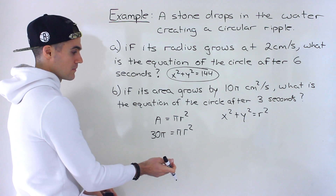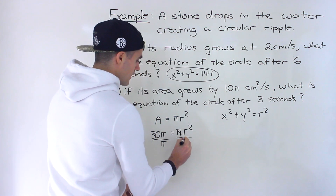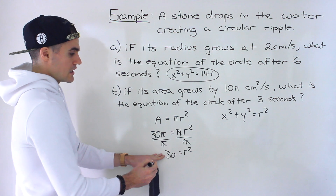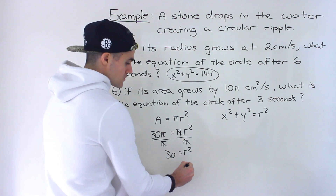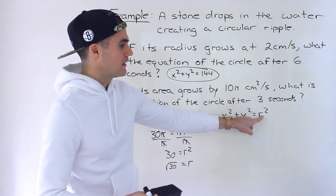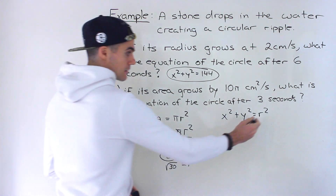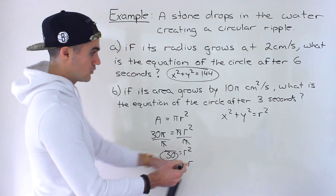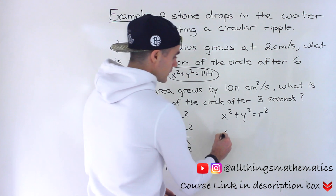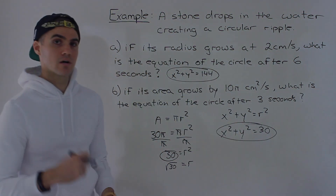Now solve for the radius. We have 30π = πr². Notice there's a π on both sides, so divide both sides by π to get 30 = r². We could take the square root to find r = √30, but notice we're plugging in r² anyway. So we can just plug in 30 directly — the square root of 30 squared just gives back 30. The answer to Part B is x² + y² = 30.